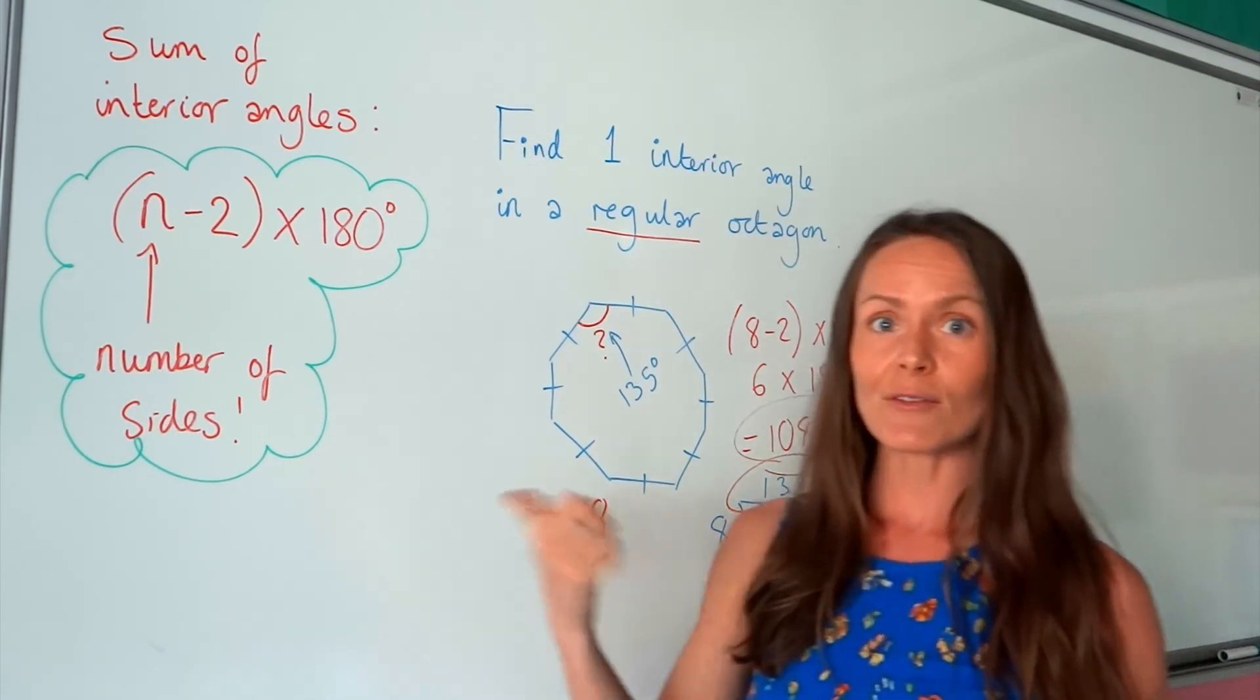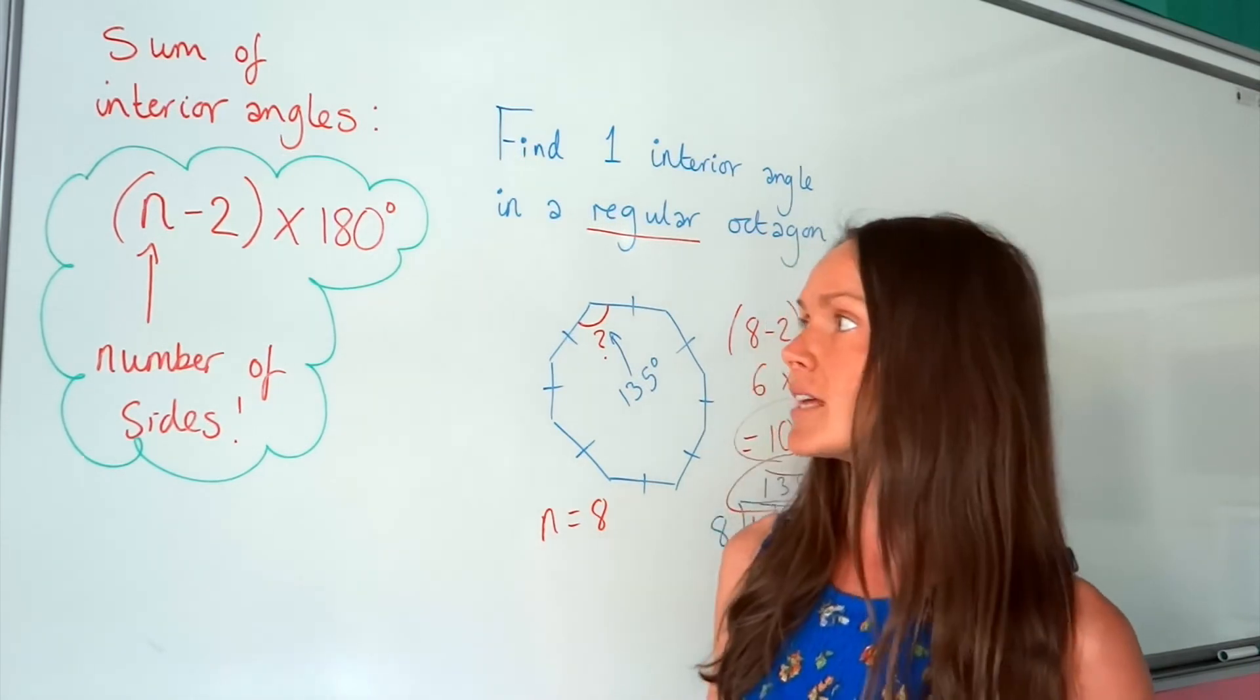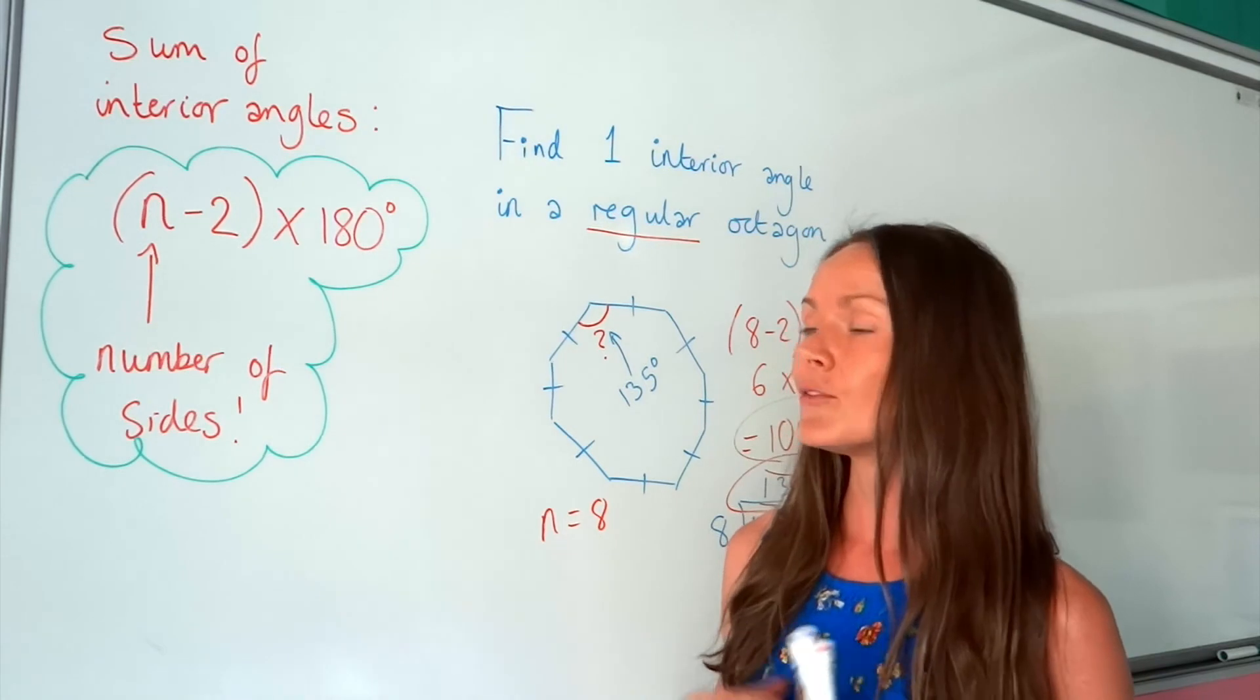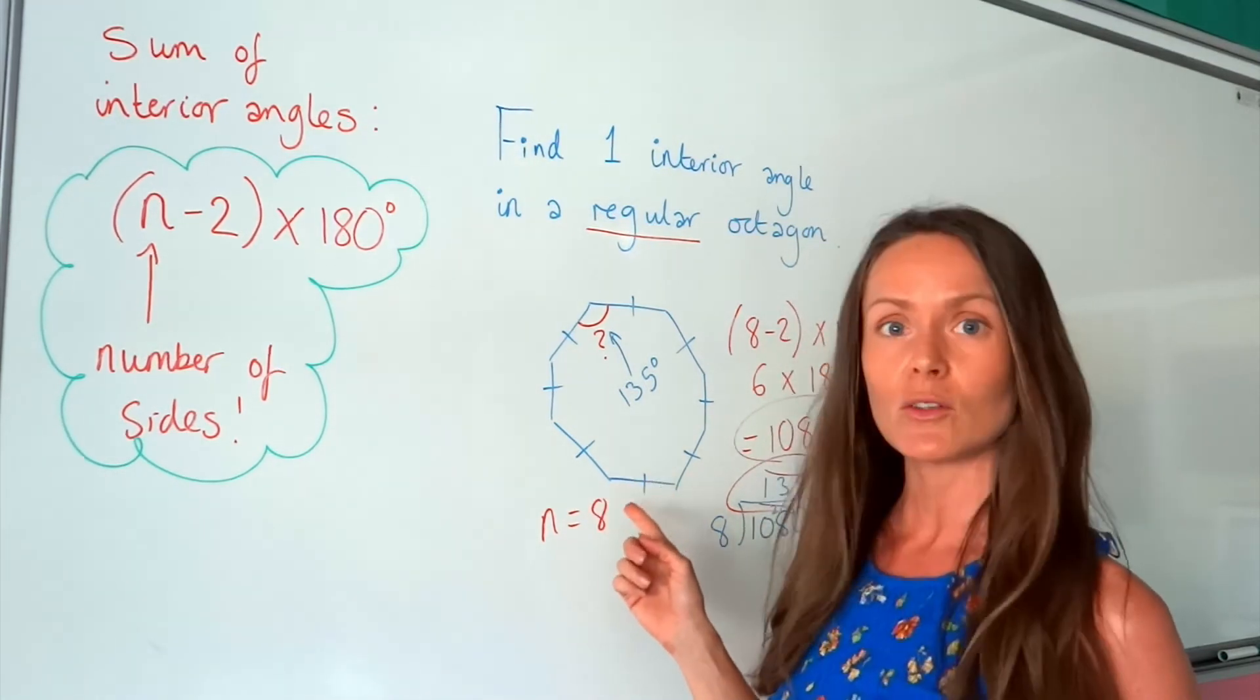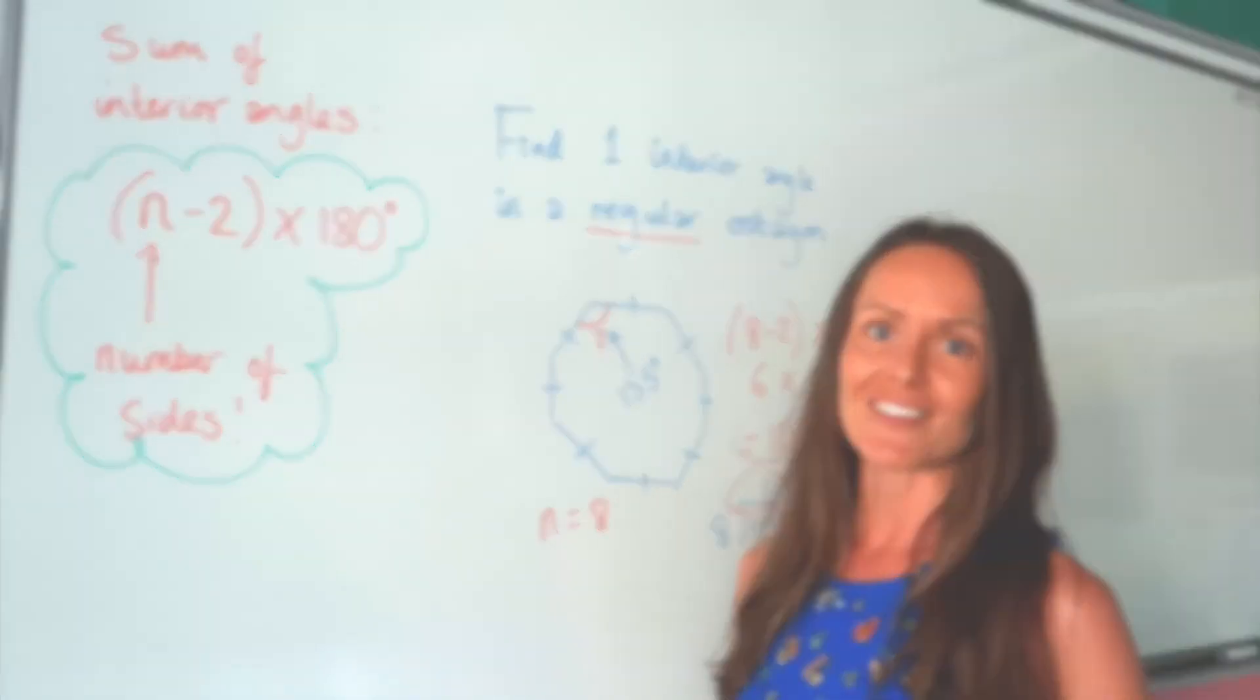So, learn that formula. That might come in handy if you have to work out the sum of interior angles. It's not too difficult to remember. If you get really stuck, you can always split your polygon up into triangles, and that will work as well. Bye for now.